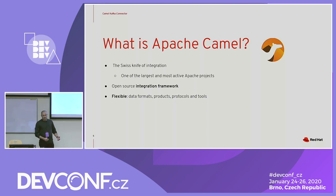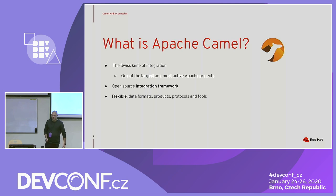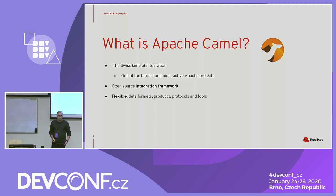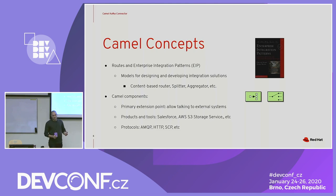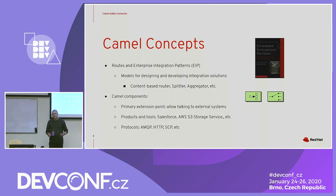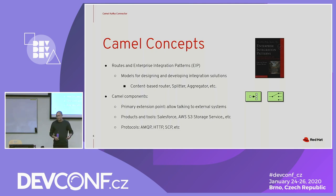What is Apache Camel? Apache Camel defines itself as the Swiss knife of integration. It is one of the largest and most active Apache projects, widely used all around the world to support multiple products and projects. Camel is an open source integration framework that is very flexible, supports multiple data formats, protocols, products, and tooling. Developers using Camel can create routes that implement enterprise integration patterns to interconnect systems and define mechanisms that allow them to filter, transform, or process exchanges going from one system to another.